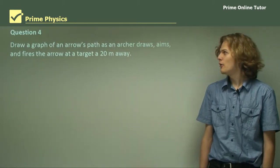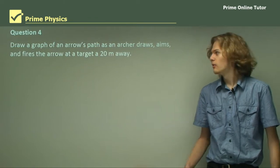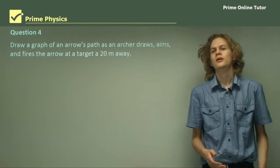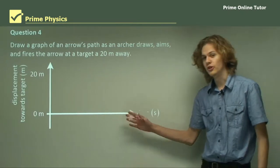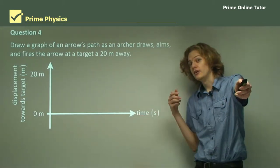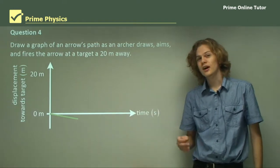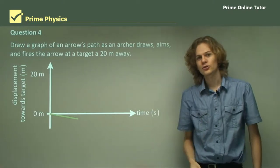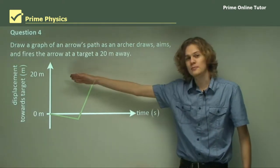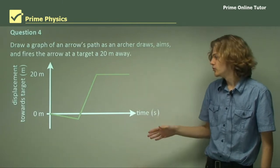Question 4. Draw a graph of an arrow's path as an archer draws, aims, and fires the arrow at a target 20 metres away. On the x-axis we have time, and on the y-axis we have displacement towards the target. When the archer draws his arrow back, it moves away from the target, so we start with a small line showing the arrow moving backwards. As soon as the archer releases the arrow, it flies forward very fast — an almost vertical line going up toward the 20 metre mark. As soon as it reaches 20 metres it hits the target and stops completely, represented by a horizontal line.